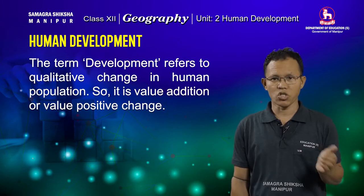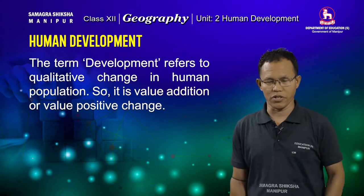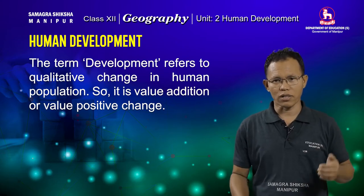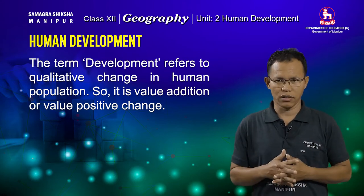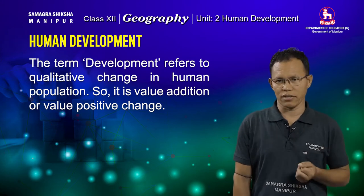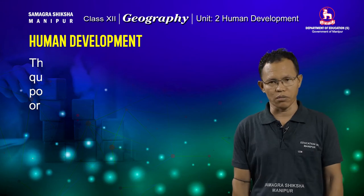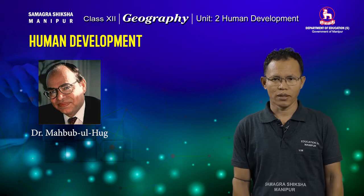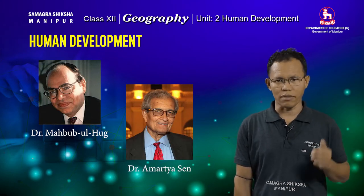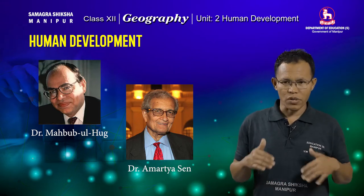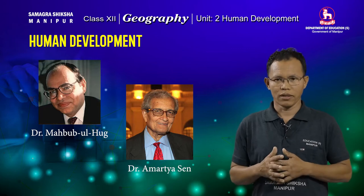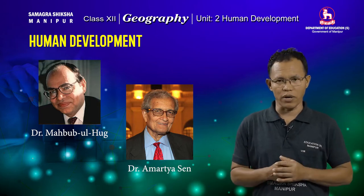Human development refers to the change in the quality of our human population. The term human development was first coined by two great economists of Asia. The first economist who put forward the concept of human development was Dr. Mahbub Al-Haq of Pakistan. The second economist was Dr. Amartya Sen. Both of them were Nobel Prize laureates.